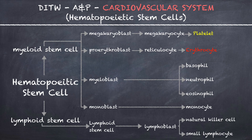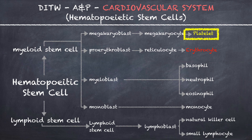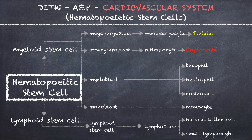Over time, the hematopoietic stem cell will differentiate into each of the different formed elements of the blood, which includes erythrocytes, leukocytes, and thrombocytes. Each formed element follows their own unique path to creation, all starting as a hematopoietic stem cell.